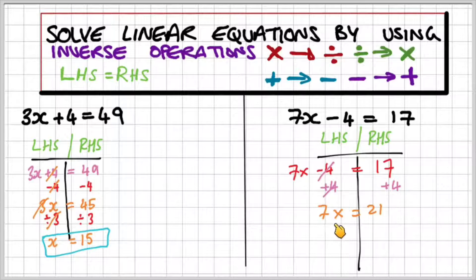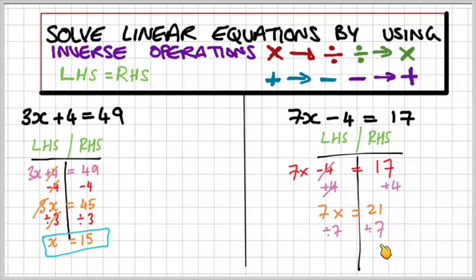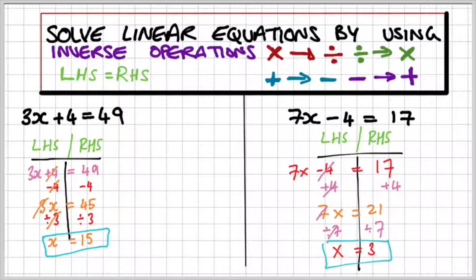Now I can divide by the 7 to get rid of it. Remember, 7 is multiplied by x — 7 times x — and the opposite of multiplication is division. That's why I'm dividing both sides by 7. So 7 divided by 7 gives me x, and 21 divided by 7 gives me 3. So if you got 3, give yourself a pat on the back.